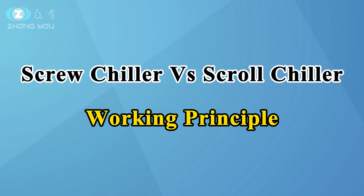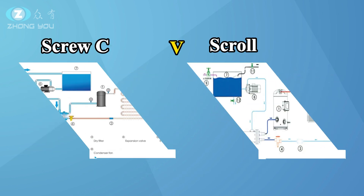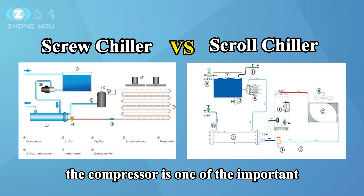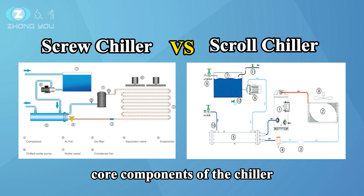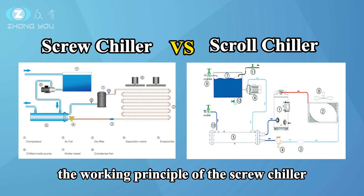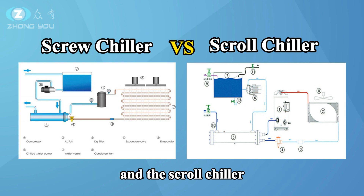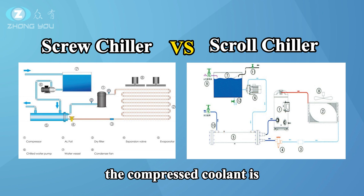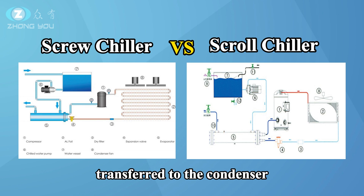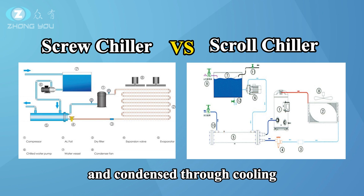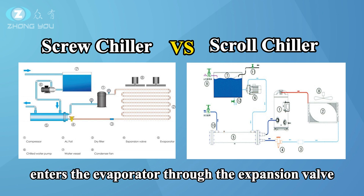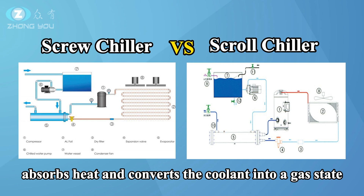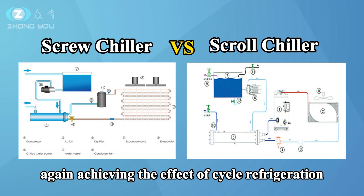Screw chiller vs. Scroll chiller — Working Principle. The compressor is one of the important core components of the chiller. The working principle of both the screw chiller and the scroll chiller is to use the compressor to compress the coolant. The compressed coolant is transferred to the condenser and condensed into a liquid state, then enters the evaporator through the expansion valve, absorbs heat, and converts the coolant into a gas state again, achieving the effect of cycle refrigeration.